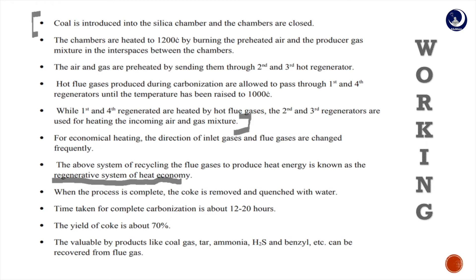There are two types of quenching: wet quenching, where a massive ram pushes red hot coke into a truck which is quenched by a water spray; and dry quenching, where the red hot coke is placed in a chamber and inert gases from boilers are passed through. We prefer dry quenching because coke produced by dry quenching is cheaper, drier, and contains less dust. The time for complete carbonization is about 12 to 20 hours, and the yield of coke is about 70 percent.